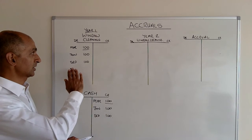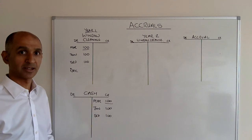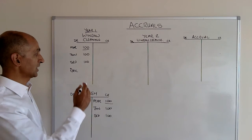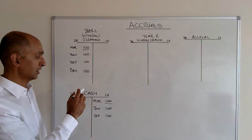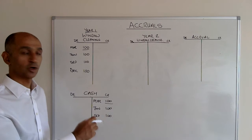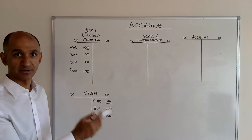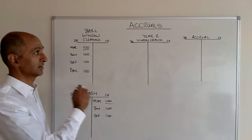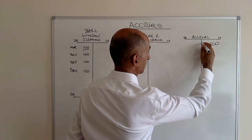If you didn't show it, your window cleaning expenses would be 300 pounds, which would understate the true costs you incurred that year. So we need to put in a 100 pound expense in December. Normally we would credit cash, but we haven't paid them. Or we would credit accounts payable, but we haven't received an invoice. So what we need to do is debit window cleaning and credit an accrual for window cleaning.